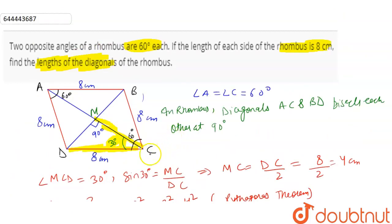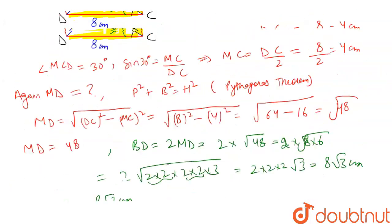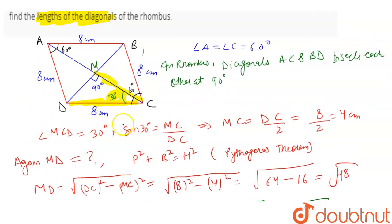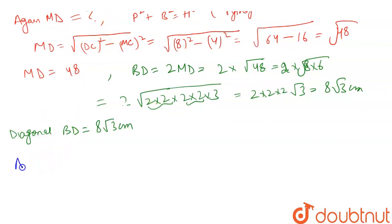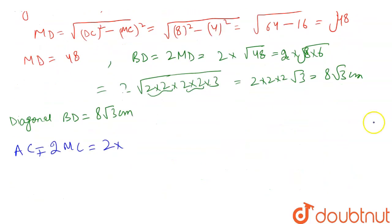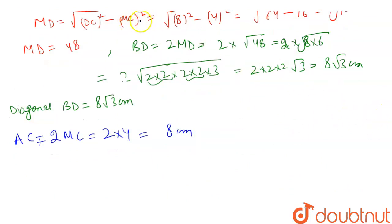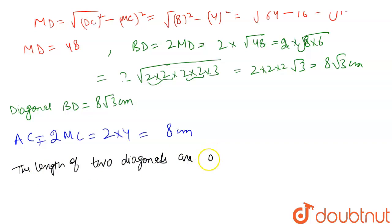We got the value of BD. Now we have to calculate AC. We know the value of MC was 4 cm, and since the diagonals bisect each other, AC equals 2 times MC, which is 2 times 4, equal to 8 cm. So the lengths of the two diagonals are 8√3 centimeters and 8 centimeters. Thank you.